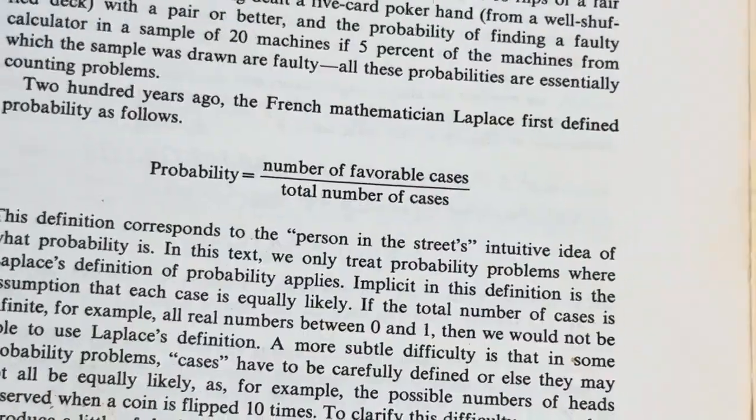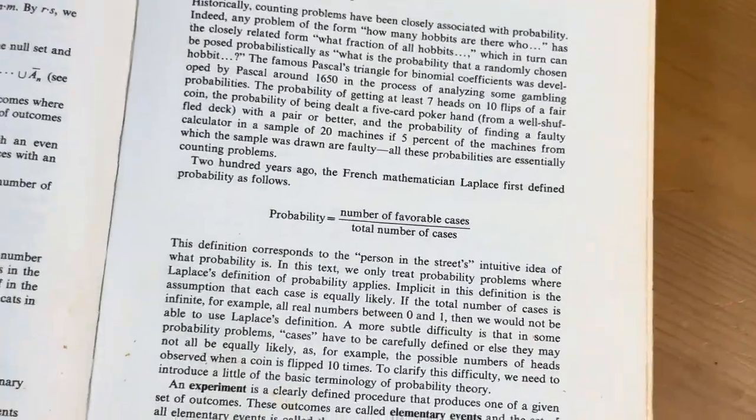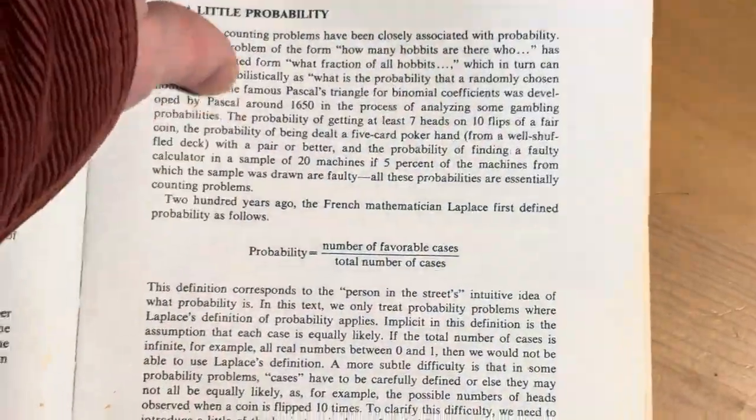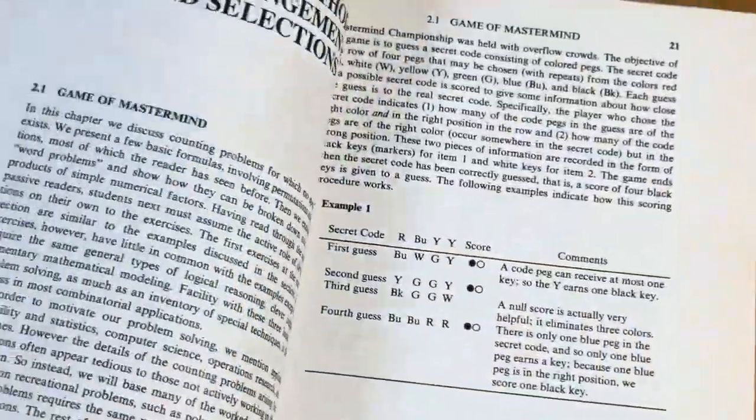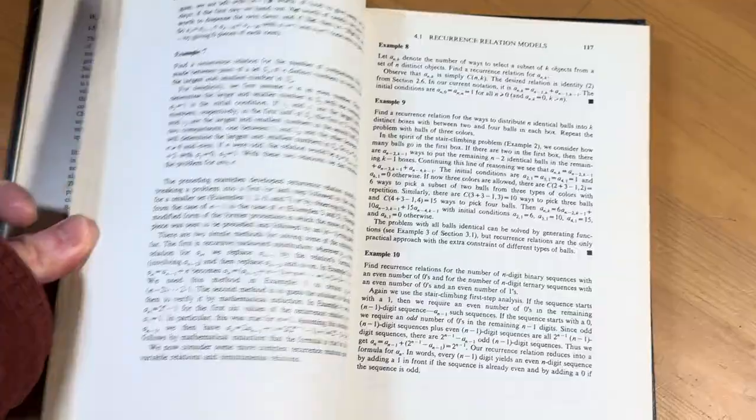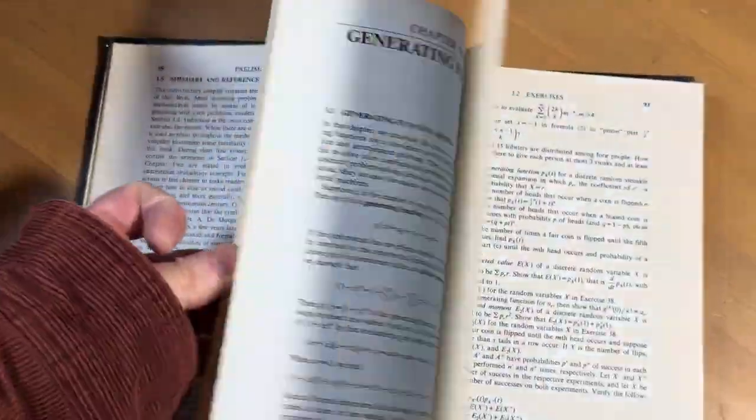Oh, this is really important. Probability equals number of favorable cases over the total number of cases. Yeah. It's just really straight to the point, right? It's a solid book. This is a really good book. Got a lot of stuff in it.